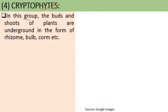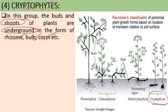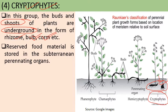The next life form is Cryptophytes. In this group, the buds and shoot tips — the perennating structures — are hidden underground in the form of rhizomes, bulbs, or corms. Rhizomes are underground stems, as in ginger and Curcuma longa (turmeric). Bulbs are present in onion, and corms are present in Amorphophallus. Their perennating structures are present under the soil surface and therefore hidden, which is why they are called Cryptophytes. They also store reserve food material such as starch in these subterranean perennating structures.